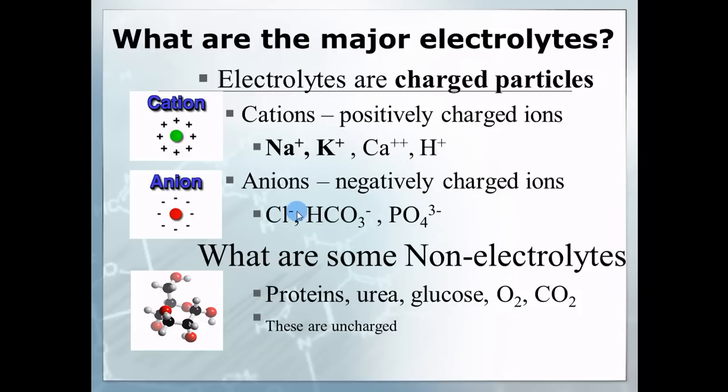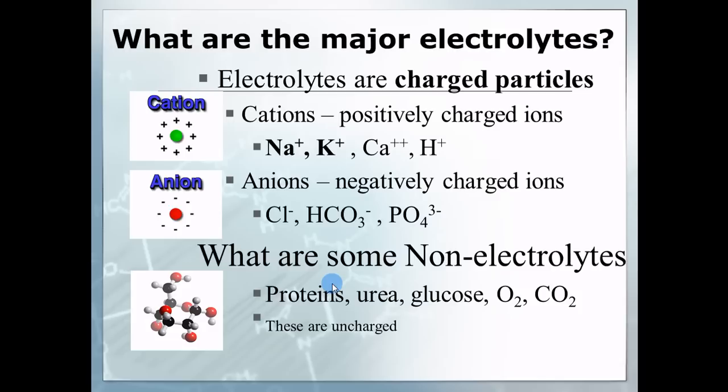If you remember cations have the plus, then the others have to be anions. There are also non-electrolytes because they either don't have a charge or they're slightly polar — kind of like water. H₂O is not technically charged, it's slightly polar. Proteins typically are slightly polar, though sometimes you'll hear them having a negative charge. We'll talk about what they can do to electrolytes too.